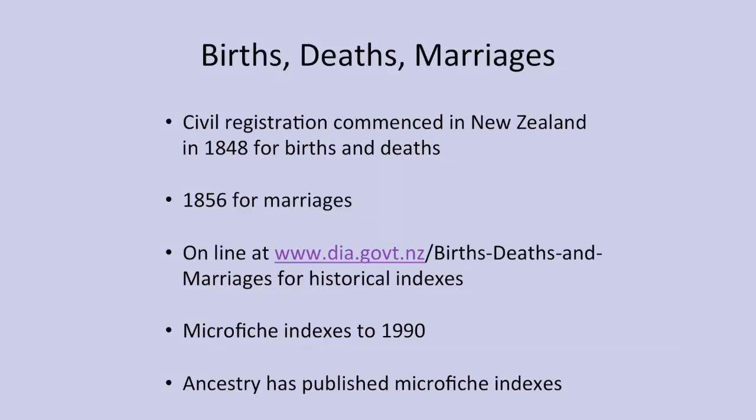Finding family in New Zealand. We start with births, deaths and marriages and civil registration which commenced in New Zealand in 1848 for births and deaths and 1856 for marriages. They can be found online for the historical ones at www.dia.gov.nz. We also have microfiche indexes through to 1990 and Ancestry has published some of these within the historical times.